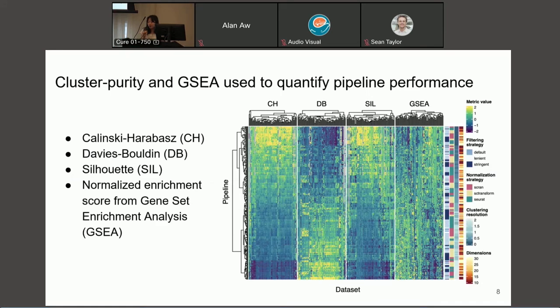So now that we have our 86 by 288 clustering results, we computed some cluster purity metrics in order to evaluate how well our pipelines performed. So our cluster purity metrics that we used were the Kalinske-Herabaz index, the Davies-Bolden index, as well as the silhouette width. We also used gene set enrichment analysis on each of our 288 by 86 clustering outputs just so that we could use the normalized enrichment score in order to measure the biological validity of each of our clustering outputs and use that as well as a quantification of pipeline performance.